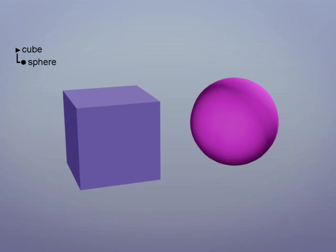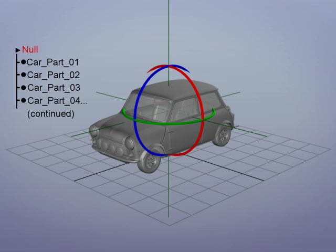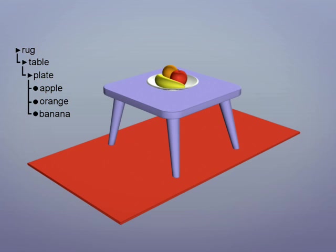In the first part of this tutorial, we'll explain a basic hierarchy. Then we'll group many objects to a null for easier transformation. In the third part, we'll organize a simple scene with multiple levels.